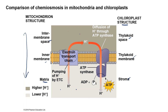Protons then diffuse through ATP synthase from the intermembrane space back to the matrix, releasing energy that triggers the synthesis of ATP by chemiosmosis. That's all — I hope this explanation gives you an understanding of the first stages of photosynthesis, the light-dependent reaction, which involves both non-cyclic and cyclic electron transport. Thank you.